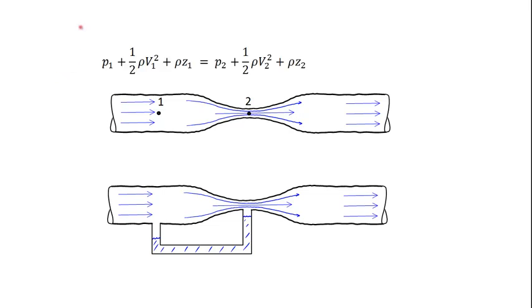And this equation is essentially a conservation of energy where it relates the pressure or flow energy, the kinetic energy, and the potential energy between points point one and two. And it says that the sum of these three forms of energy have to equal the sum of the three forms of energy at point two.